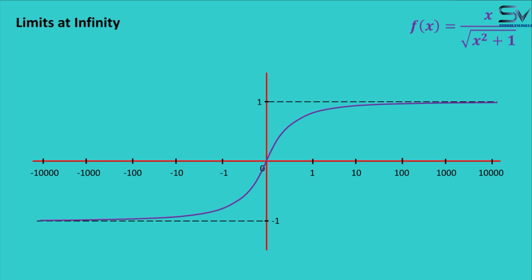Let us find the limit of this function when x approaches infinity. We will focus on this black dot. What value is the function approaching as x takes on larger and larger positive values? To 1, right? In this way, we will say that the limit at infinity of this function is 1.